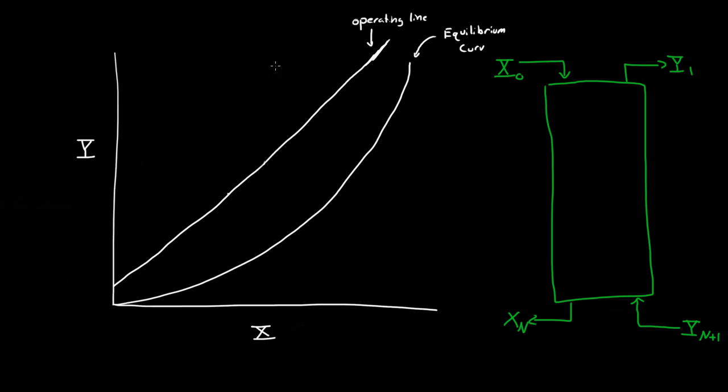With this information or this graph, we have the operating line—it is always a line—and we also have the equilibrium curve. And it is set, we cannot change it. We can't ever change our operating line.